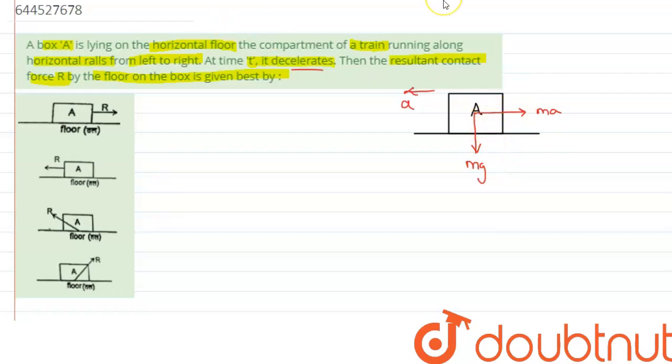we can say the resultant of these two forces will be lying somewhere over here. So we can say this is the resultant force, which is given by the formula: square root of mg squared plus ma squared.